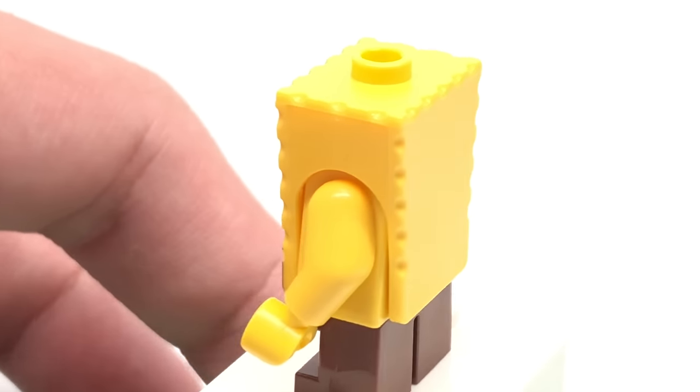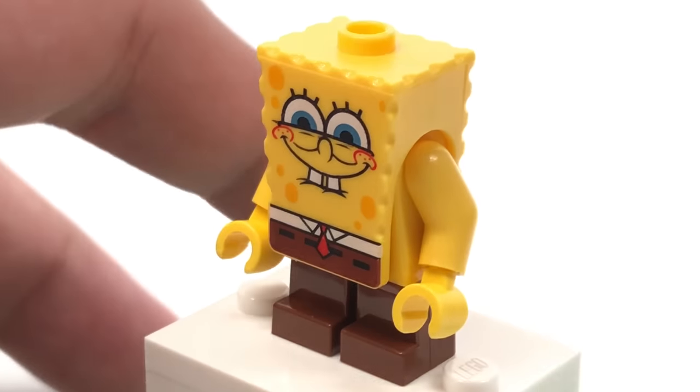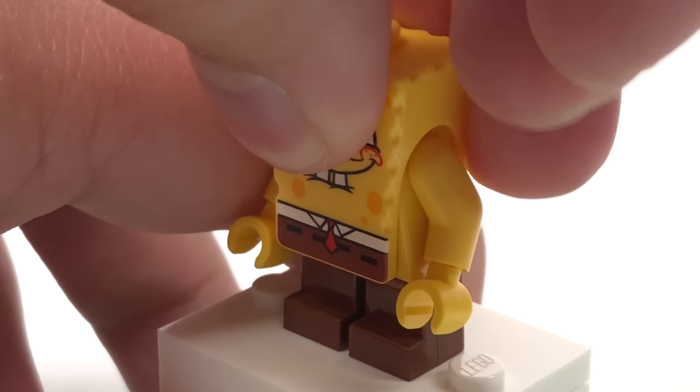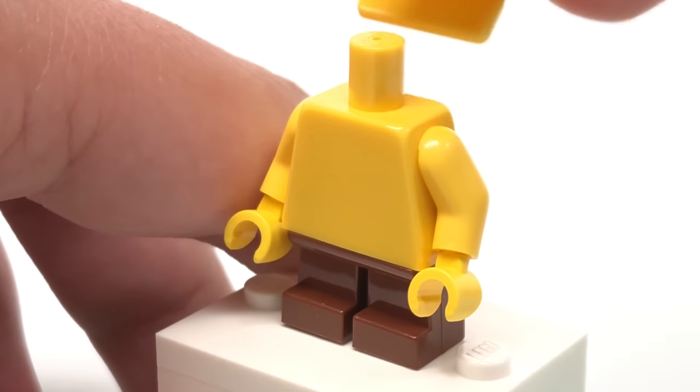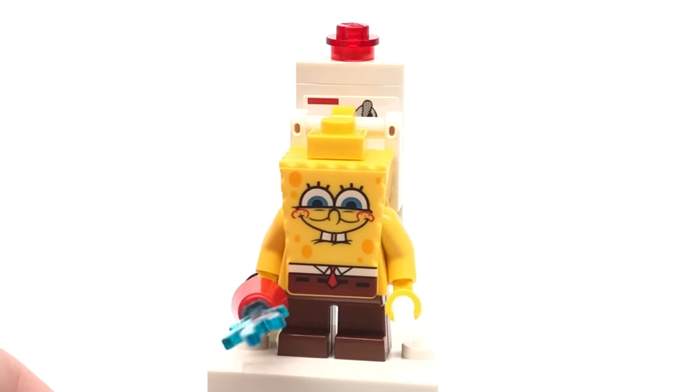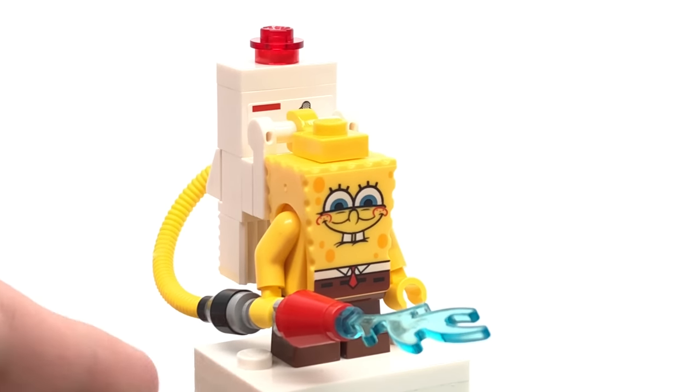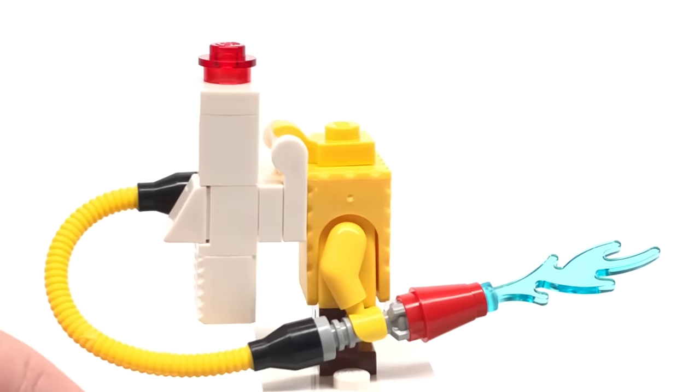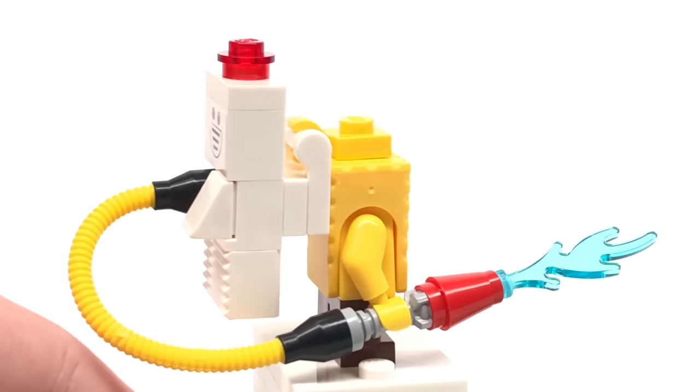this is the standard Spongebob build, where we do have just a plain yellow torso underneath, which this headpiece kind of wraps over, and the small short brown legs. But also included with Spongebob is this nice reef blower build, which I like how this is built up using that hose piece with two different colors on it.